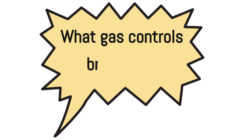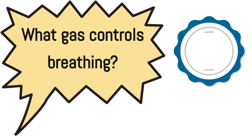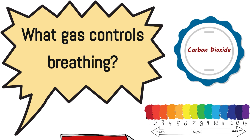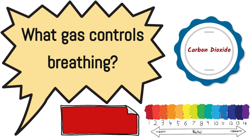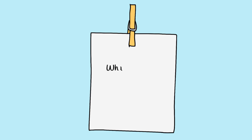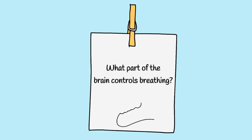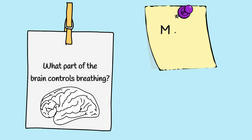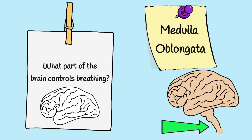What gas controls breathing? It's carbon dioxide. What part of the brain controls breathing? It's the medulla oblongata. The medulla oblongata is responsible for sending those electrical impulses to the intercostal muscles and the diaphragm.